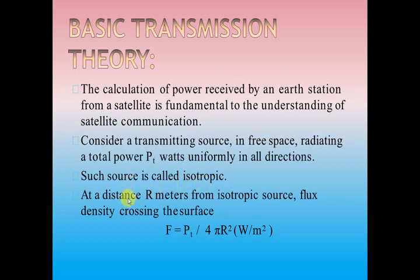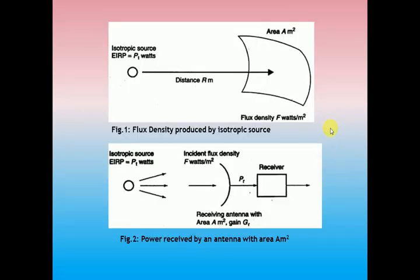The distance between the transmitter and the receiver is simply R meters. Based on this, we calculate the flux density that will cross the receiver surface: F equal to the amount of power transmitted PT divided by 4πR². We take 4πR² because the shape of the transmitting antenna is spherical, and the unit of this flux density is represented by watts per meter square.